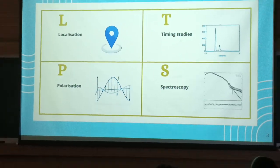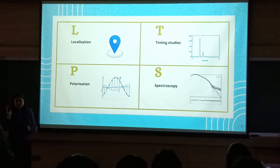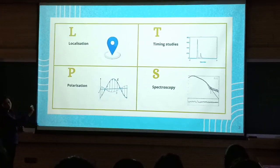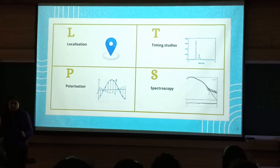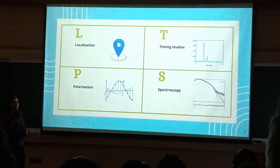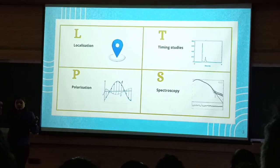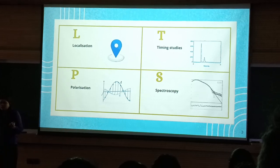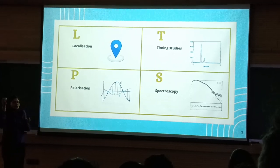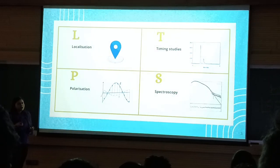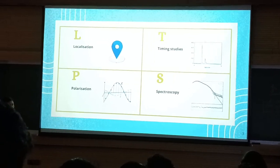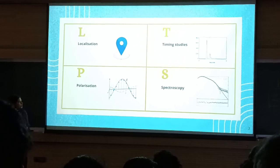There are four main aspects of GRB science. The first one is localization — where the GRB is coming from. GRBs are explosions happening in space; they can happen anytime, anywhere. They are not from a specific source, so knowing the localization — where the burst came from — is very important.